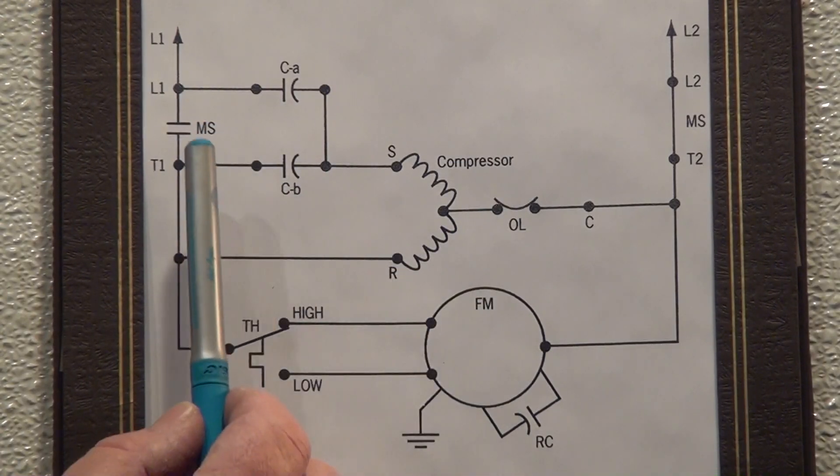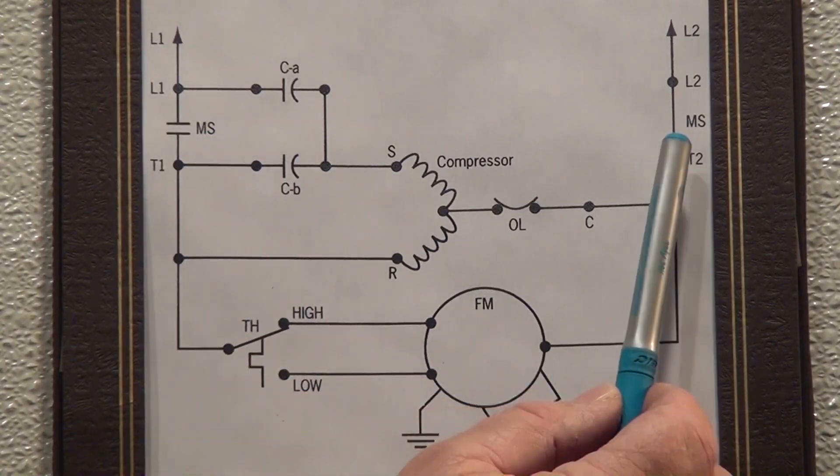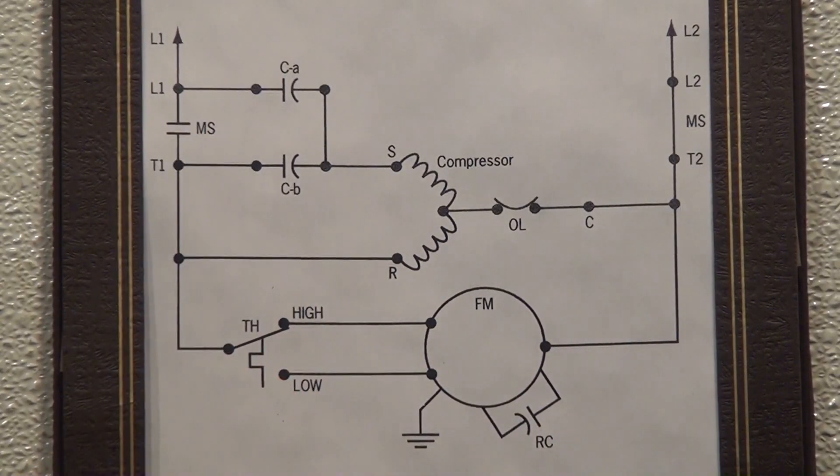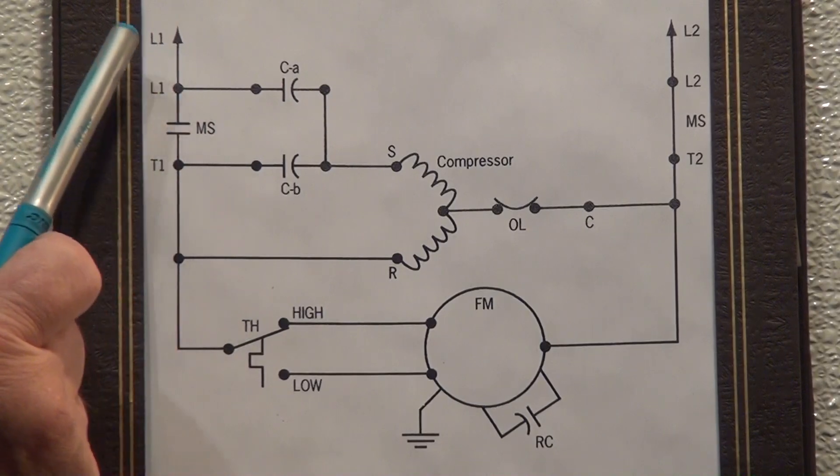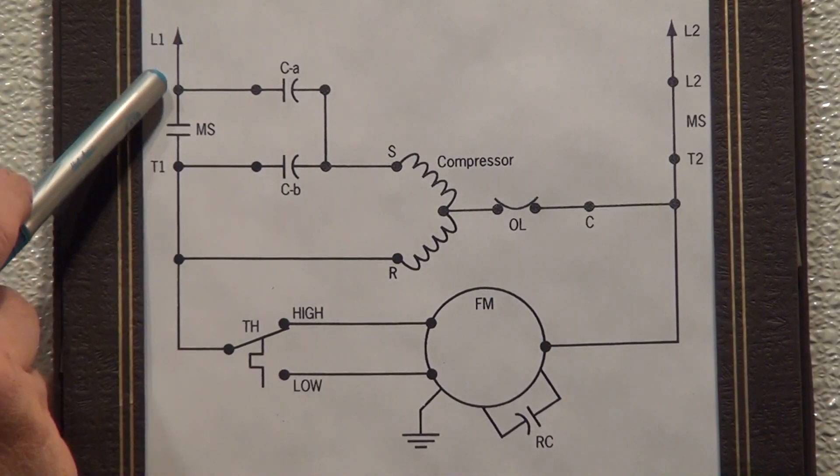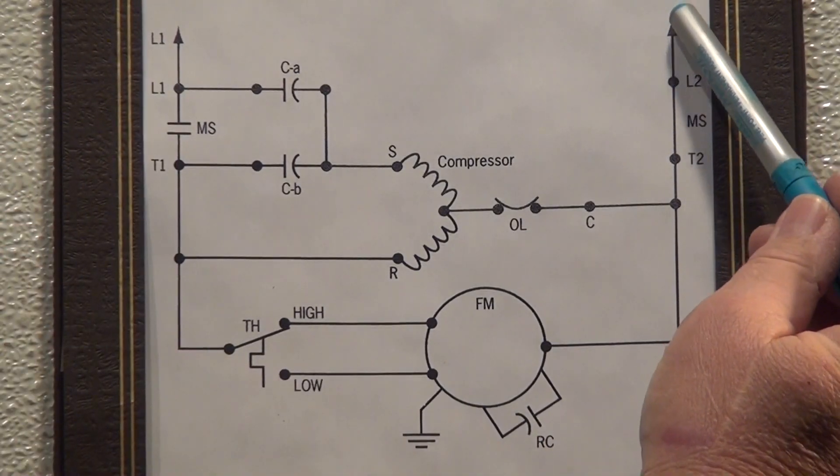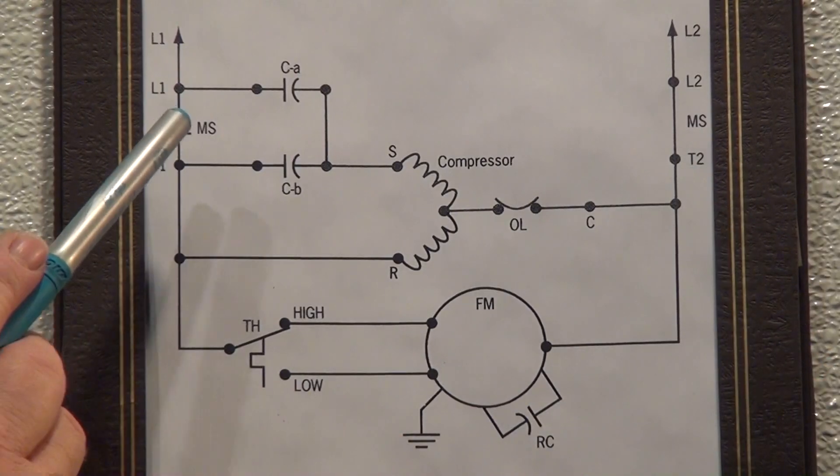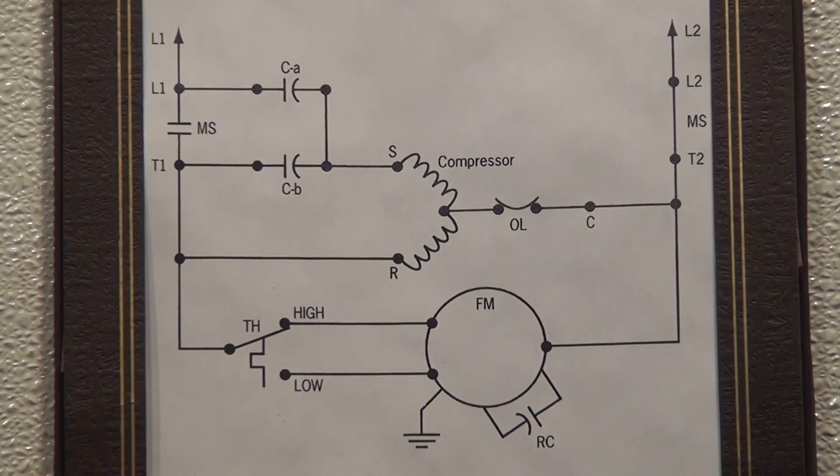First of all, I want you to take a look at the MS or motor starter or contactor if you prefer to call it that. You're going to notice that this diagram clearly shows that we have what we refer to as a single pole contactor. In other words, there's only one normally open contact point.